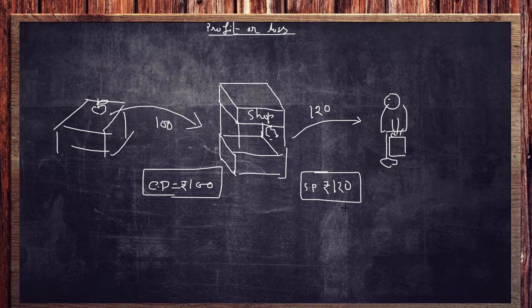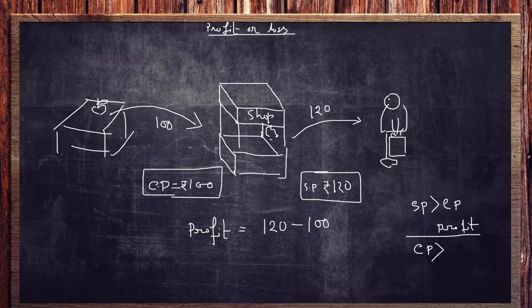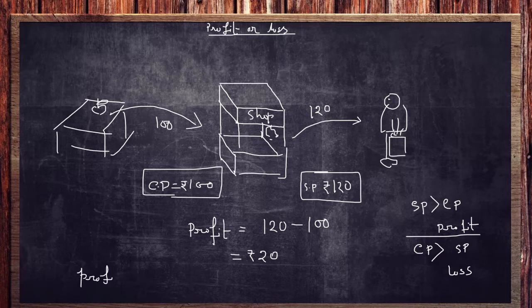In this example, the selling price is 120 rupees and the cost price was 100 rupees. Since SP is greater than CP, profit occurs — you are gaining extra money by selling. Whenever SP is greater than CP, profit happens. The profit here is 20 rupees. Now we need to express this as a profit percentage.